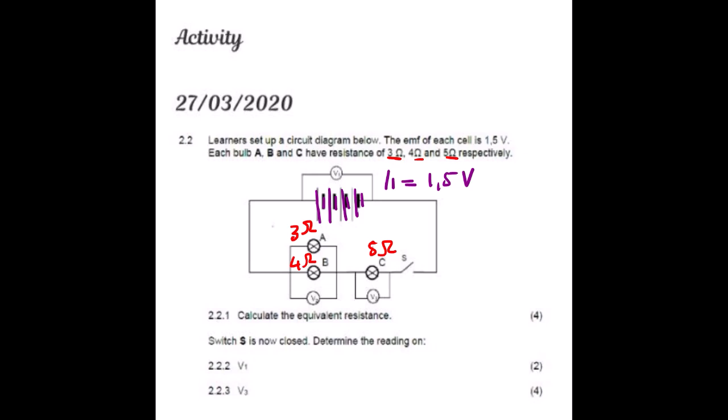Question 2.2.1: calculate the equivalent resistance. Sometimes the question specifies to calculate the effective resistance only on the parallel section, but in this case they say equivalent resistance, meaning we calculate the total resistance, which is R_T.